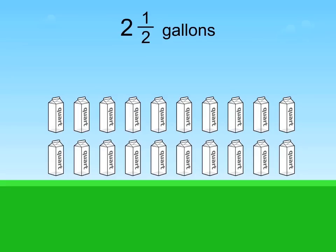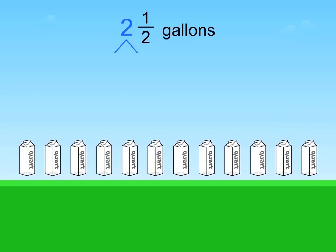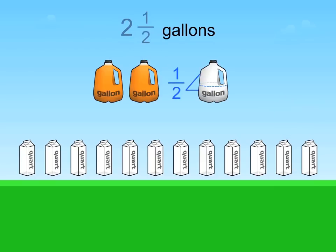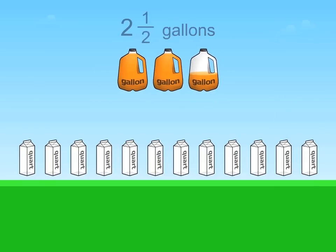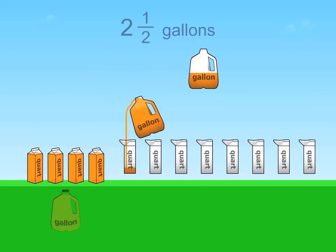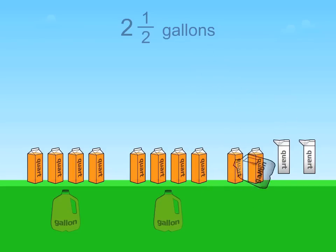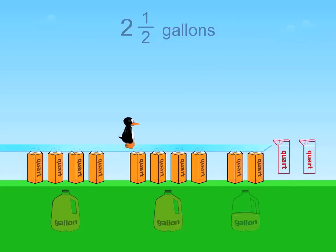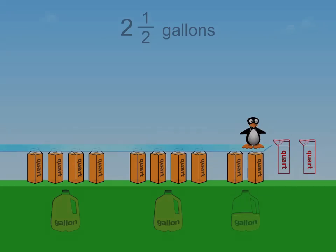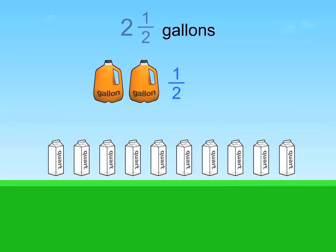For example, in this volume conversion problem, we need to convert 2.5 gallons into quarts. The student answers incorrectly, choosing 12 quarts. Notice how the software animates the consequences of the student's answer, providing a clear visual of the correct conversion rates of 4 quarts to a gallon, and showing the student precisely why their answer was incorrect. The two extra quarts mean Gigi is unable to cross the screen. Students then try the same problem again, immediately able to apply their new understanding.